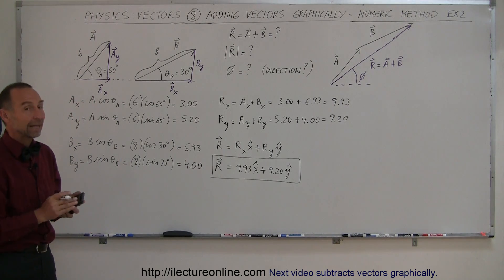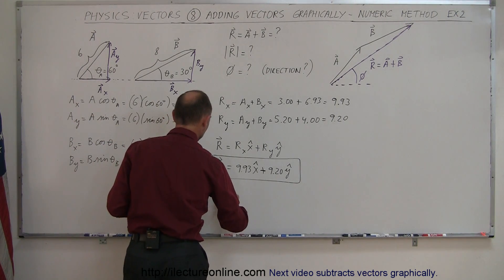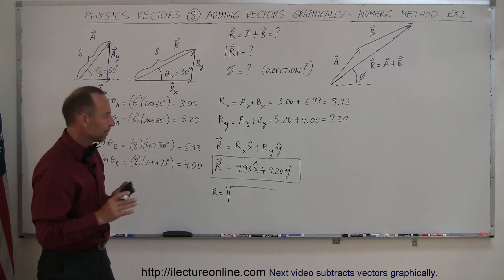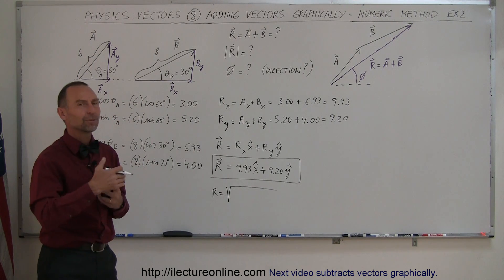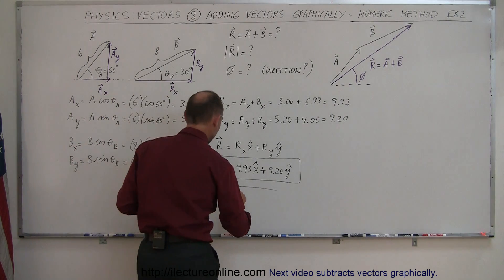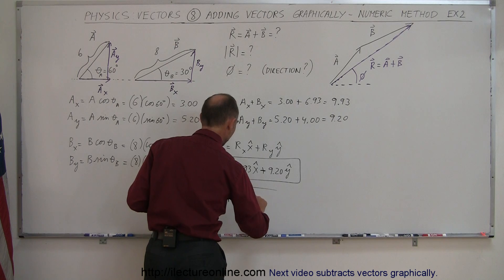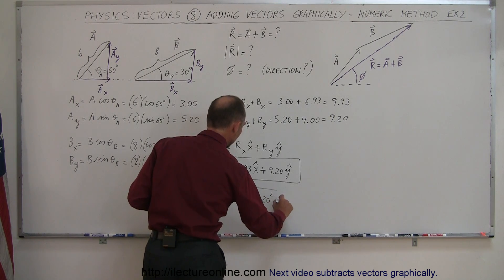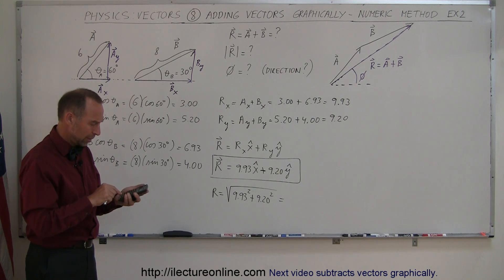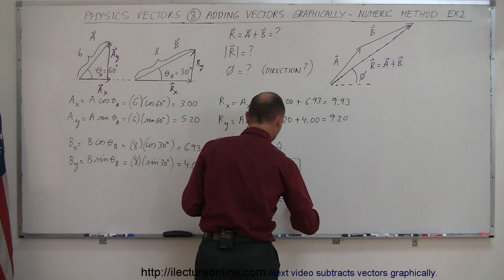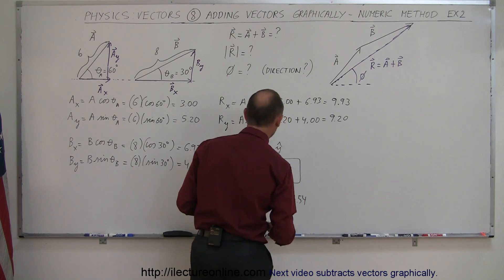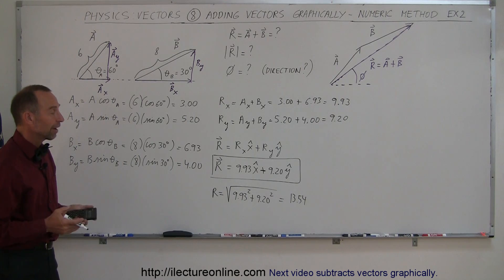To find the magnitude of the resultant, remember that the magnitude of any vector equals the square root of the x component squared plus the y component squared — that's in two dimensions. In three dimensions you'd also add the z component squared. So here, the magnitude of R equals the square root of 9.93 squared plus 9.20 squared, which gives 13.54 units.